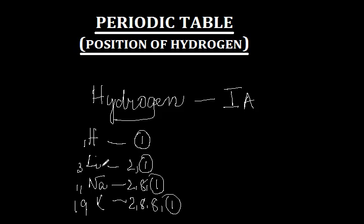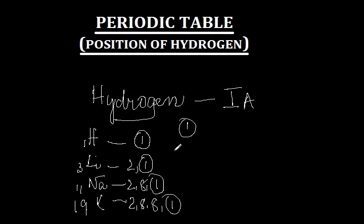Like all other alkali metals — lithium, sodium, potassium, rubidium, cesium, etc. — hydrogen also has one valence electron in the outer shell. Therefore hydrogen is monovalent, like the alkali metals. This is the first argument behind keeping hydrogen in group 1A.